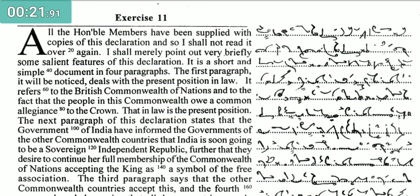The first paragraph, it will be noticed, deals with the present position in law. It refers to the British Commonwealth of Nations and to the fact that the people in this Commonwealth owe a common allegiance to the Crown — that is the present position in law.